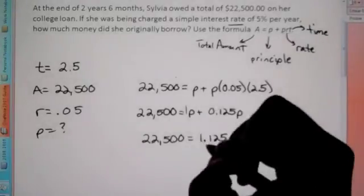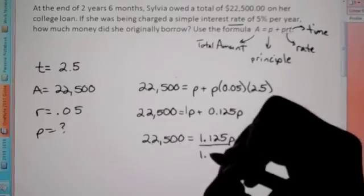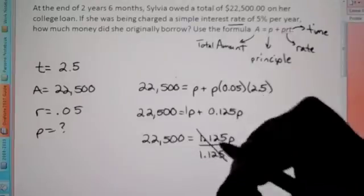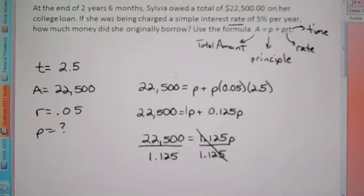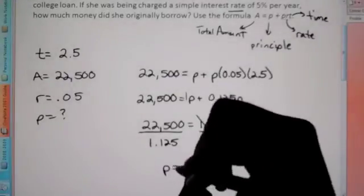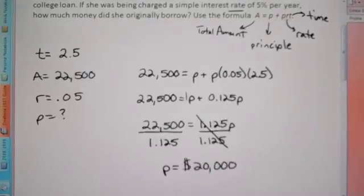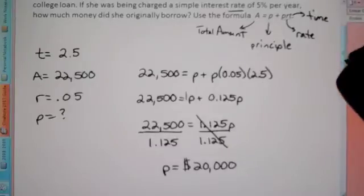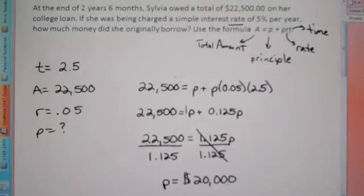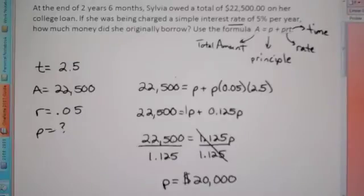To get P by itself — because we're trying to isolate the variable, get it by itself — divide by 1.125. So on a calculator, if we divide by 1.125, we see that P is equal to $20,000. So what does that mean? It means Sylvia borrowed $22,000 at an interest rate of 5% per year, and after two and a half years, that's how much she owed because of interest.